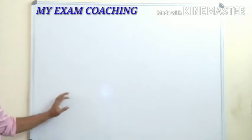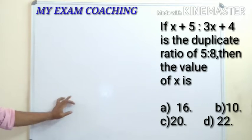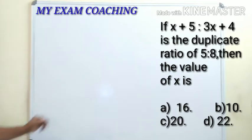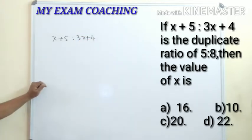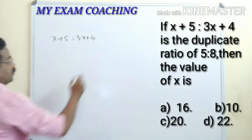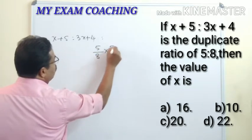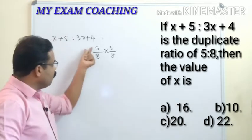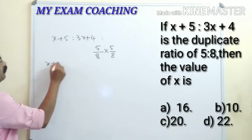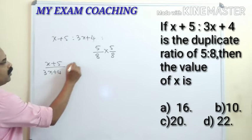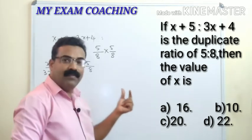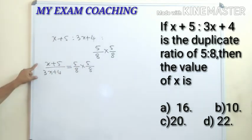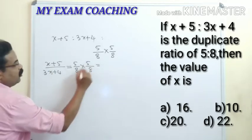The next question: if x + 5 is to 3x + 4 is the duplicate ratio of 5 is to 8, find the value of x. The duplicate ratio of 5 is to 8 is 5/8 × 5/8 = 25/64. So we write: (x + 5)/(3x + 4) = 25/64.